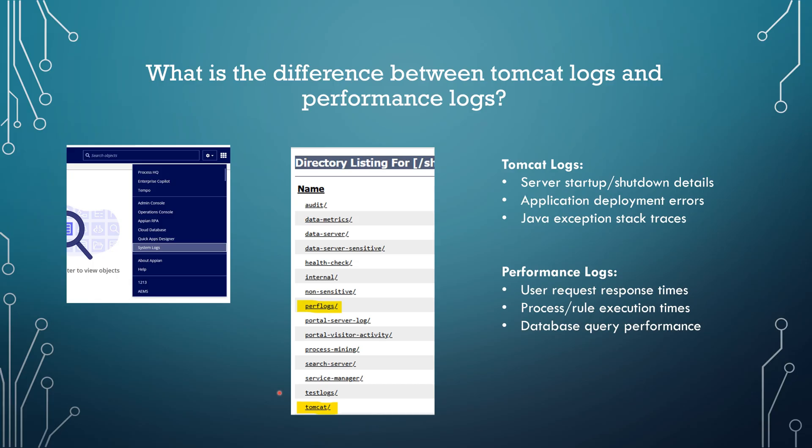The performance log — or perf log — is where you go when you want to find the request or response time for a specific user. You can also find process or rule execution times, and how much time it takes to query data from the database. All those performance-related details can be found under the performance log. These are the key points to identify the differences between Tomcat logs and the performance log.